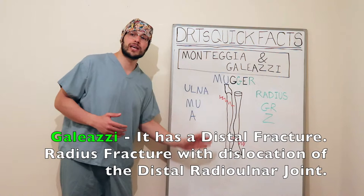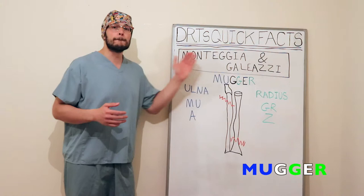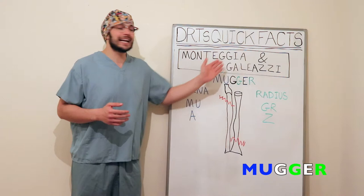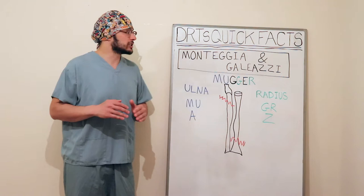An easy way to remember this is the word MAGA. The M-U stands for Monteggia and ulna, and the G-R stands for Galeazzi and radius. An easy way to remember whether the fracture is proximal or distal is to use the letters in the words — the A at the end of Monteggia is in the proximal part of the alphabet, therefore the fracture is in the proximal part of the ulna.